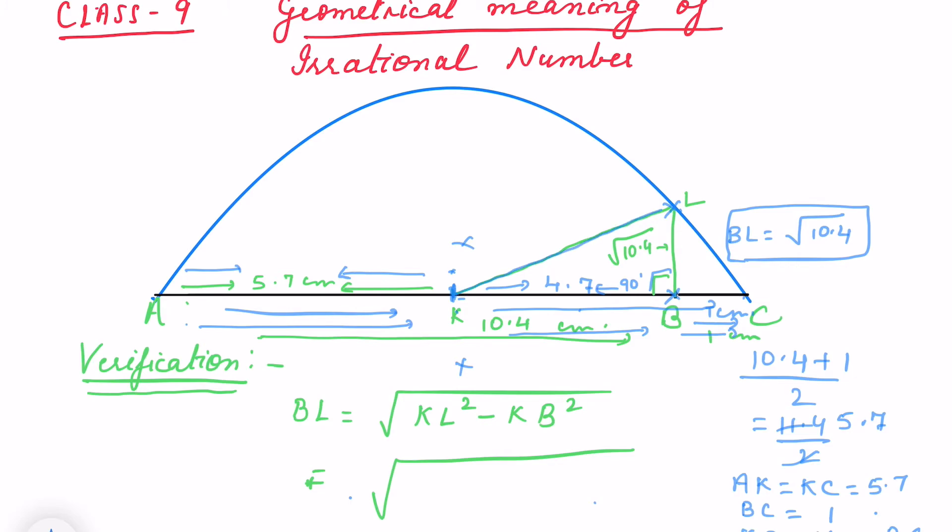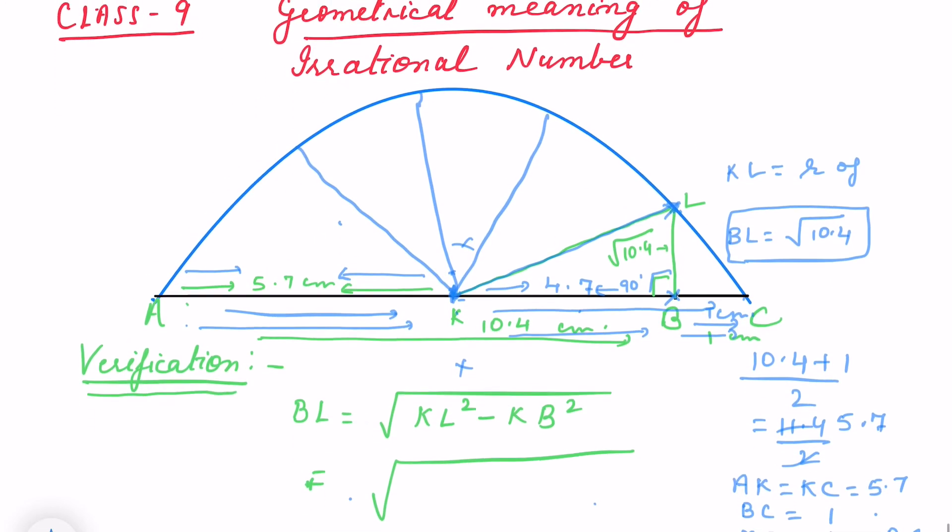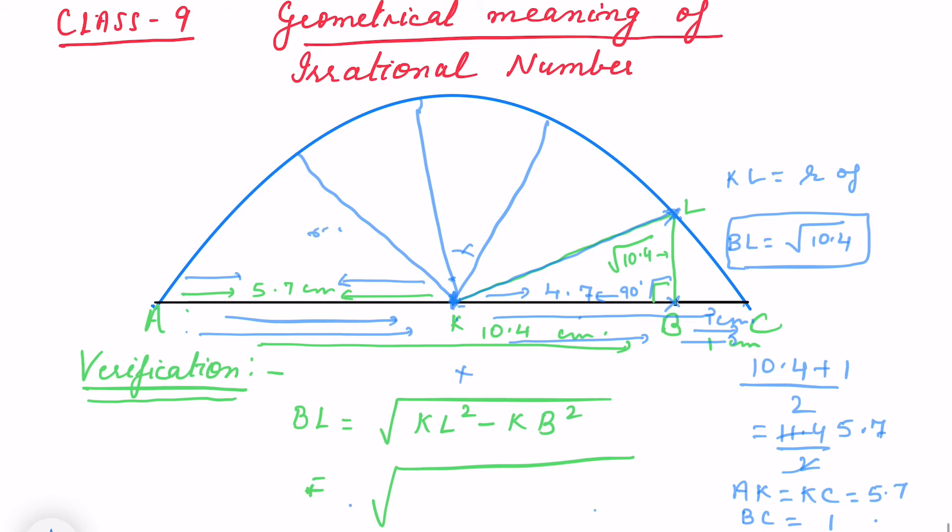What will be this distance? KL. What is KL? KL is radius of the semicircle or circle. If you say these, all are radius of the semicircle, that means all are 5.7.